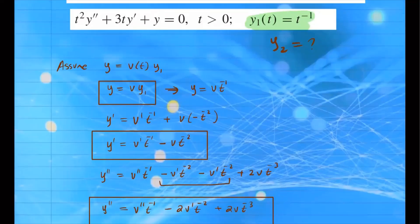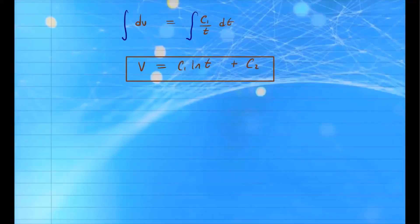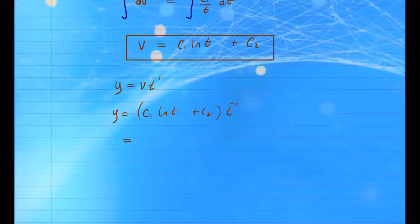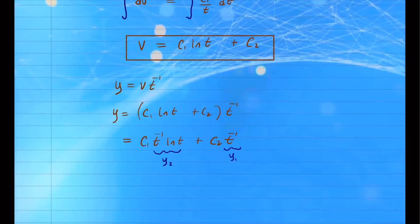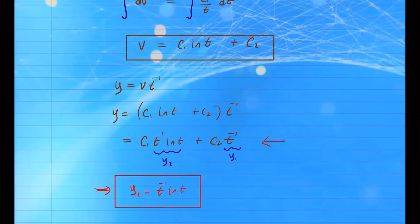Now we're ready to write our solution. Recall our assumption: y equals v times t to the negative 1. Plugging in v equals c1 ln t plus c2, we get y equals (c1 ln t plus c2) times t to the negative 1. Distributing, y equals c1 t to the negative 1 ln t plus c2 t to the negative 1. This is the general solution. Since y1 equals t to the negative 1 was given, the second independent solution is y2 equals t to the negative 1 times ln of t.